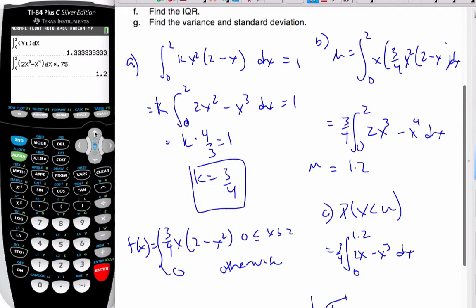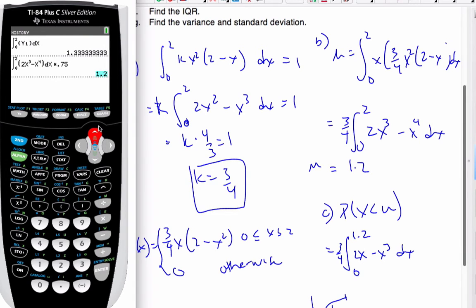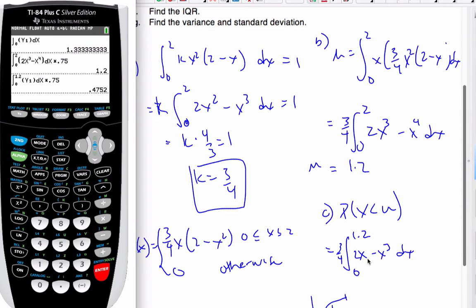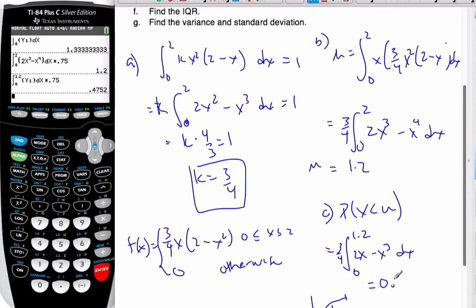And so if I go up to here, do it in my calculator, I can go back to, this should be 1.2. And then I'm going to take that value and multiply it by 3 quarters times 0.75. And that gives me a value of 0.475 is the probability that the random variable is under mu.